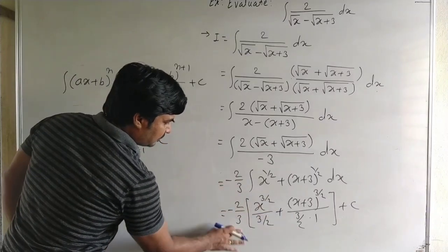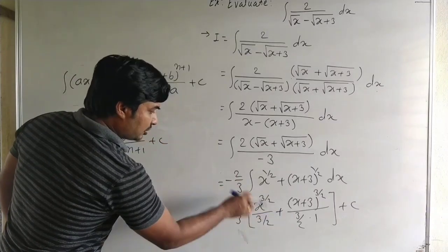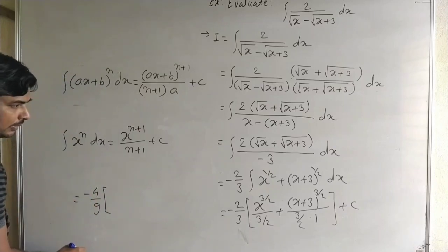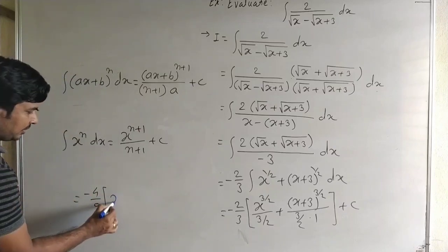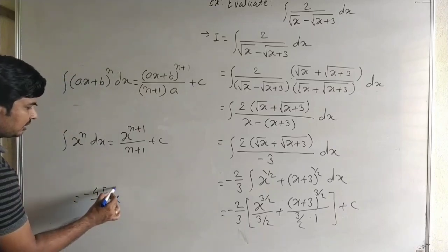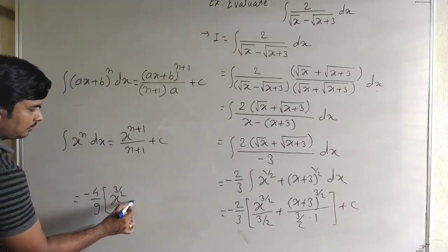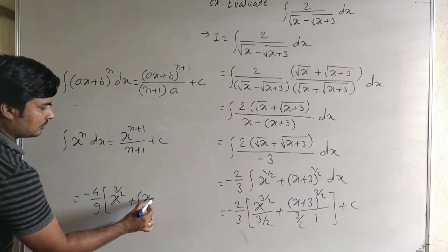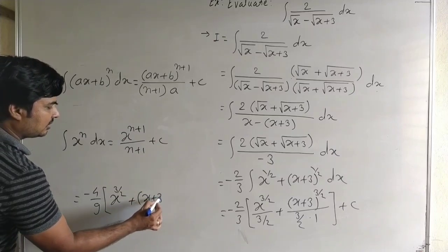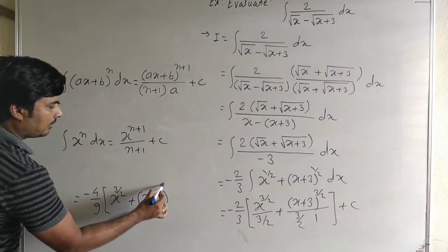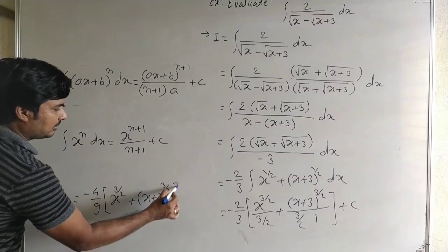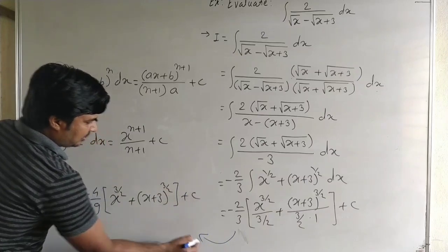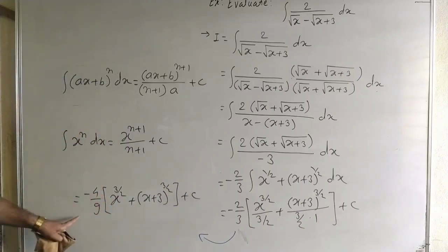Both terms are in the form of x to the power n. For x to the power n the integral is standard, but for x plus 3 to the power 1 by 2 we use the formula: integral of ax plus b to the power n equals ax plus b to the power n plus 1 upon n plus 1 into a plus c. The final answer is minus 4 by 9 into x to the power 3 by 2 plus x plus 3 to the power 3 by 2, plus c.